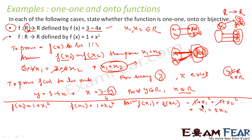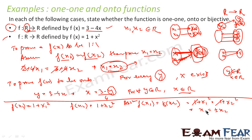Since x1² = x2² gives x1 = ±x2, x1 is not necessarily equal to x2. For example, x = −2 and x = +2 both give f(x) = 1 + 4 = 5. Since x1 = ±x2 and not strictly x1 = x2, we can say this function is not one-to-one.